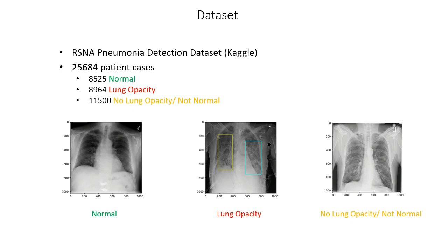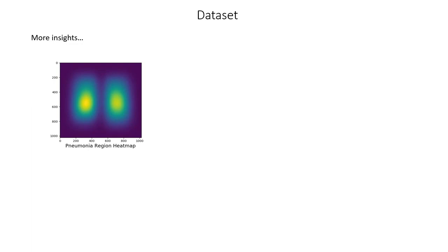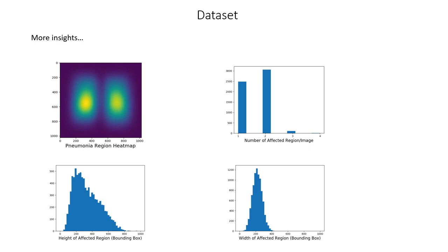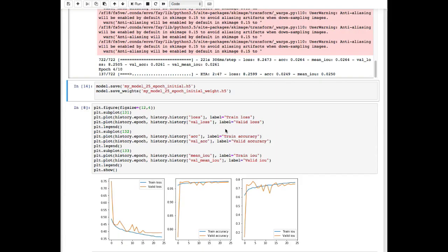Here we show some more insights about our dataset. This heat map shows that the most pneumonia-affected regions are located in two specific areas of the radiographs. In the second image, we can see that most radiographs in our dataset contain one or two affected regions. At the bottom, we show the histogram for the height and width of the pneumonia-affected regions.